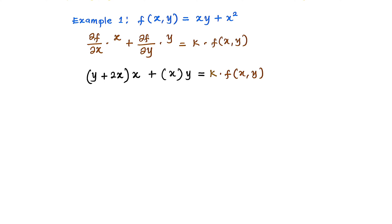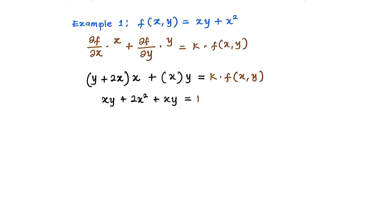Opening the brackets: (y + 2x)·x gives xy + 2x², and x·y gives xy. So the left side becomes xy + 2x² + xy, which equals k multiplied by the function. Collecting like terms, we get 2xy + 2x², which equals k·f(x, y).